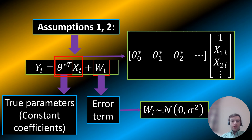This diagram illustrates assumptions 1 and 2. We have a linear structural model with theta star being the true parameters, transposed and multiplied by xi, which is your data. Then you add an error term wi, drawn from a normal distribution with mean 0 and standard deviation sigma squared. For each i, you have the same sigma — the variances are constant. That's called homoscedasticity. Later we'll see something called heteroscedasticity, where sigma differs for each i.